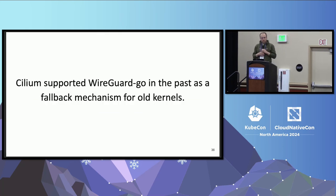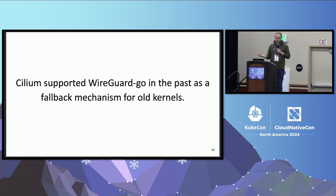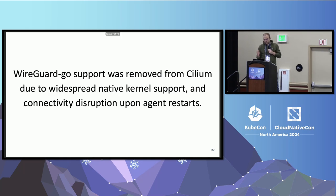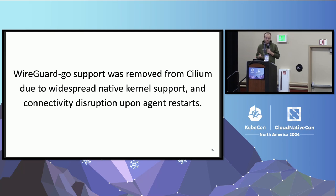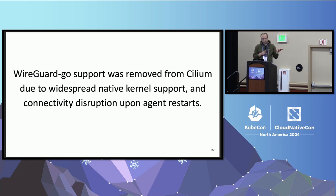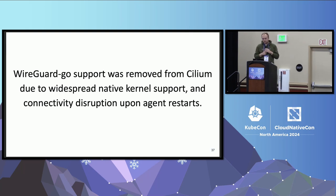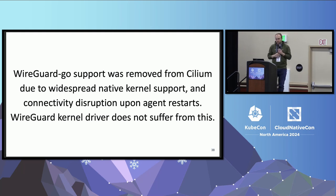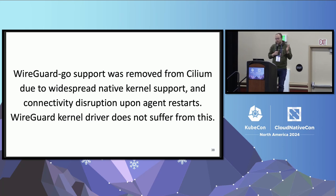As a side note, Cilium also had WireGuard Go support for a while — in the initial implementation it was used as a fallback for older kernels where WireGuard was not supported. But more recently it got removed because kernel support is now widespread, so there was not necessarily a need for it. More importantly, with WireGuard Go, because it's a user-space process, if you recycle the pod then the connections going through WireGuard get disrupted. This is not an issue with the WireGuard kernel driver because everything is nicely decoupled — data path versus control plane. So you can update or restart Cilium while traffic keeps flowing, no problem.